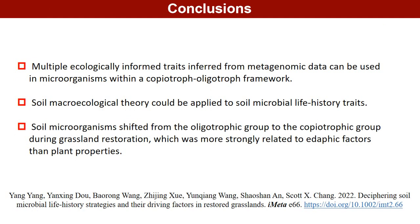Taken together, we draw the following conclusions. First, multiple ecologically informed traits inferred from metagenomic data can be used to characterize microorganisms within a copiotrophy-oligotrophy framework. Second, ecological life history theory could be applied to soil microbial life history traits. Third, soil microorganisms shift from the oligotrophic group to the copiotrophic group during grassland restoration, which was more strongly related to edaphic factors than plant properties.